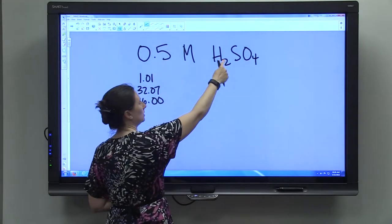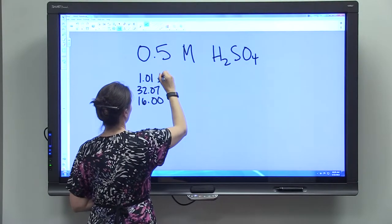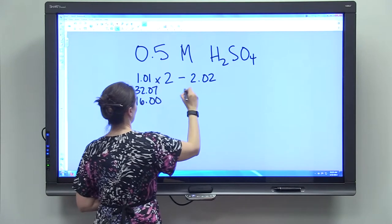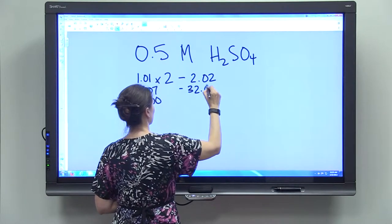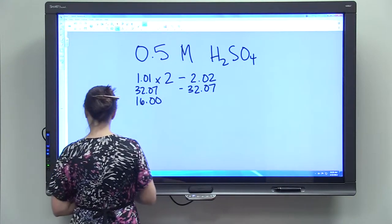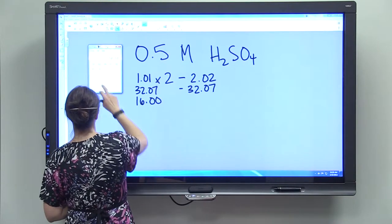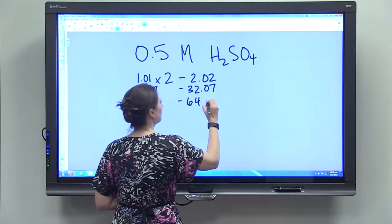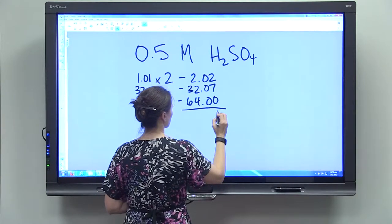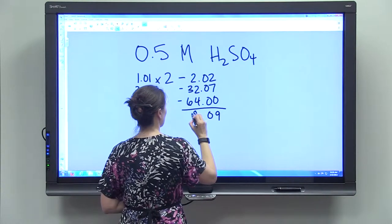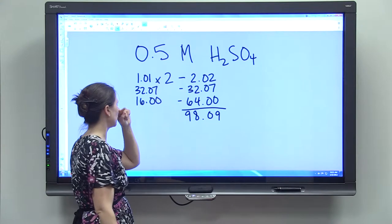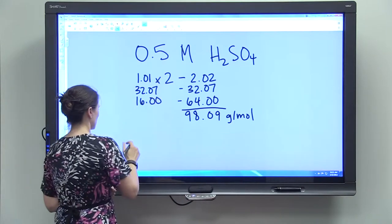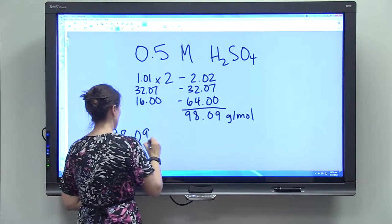We have two atoms of hydrogen per molecule of sulfuric acid, so we have to multiply this by 2. We only have 1 of sulfur, so 32.07. And we have 4 of oxygen, so I'm going to multiply just to make sure. 64. And then I'm going to add those together to give me a mass of 98.09, and that's grams per mole. So 98.09 grams per mole.